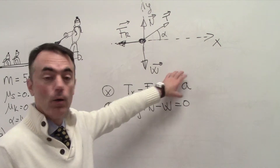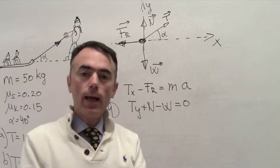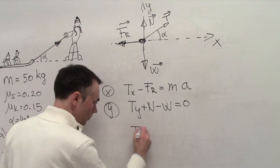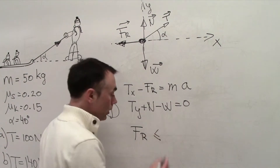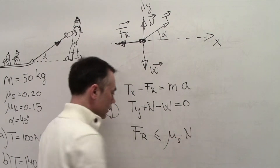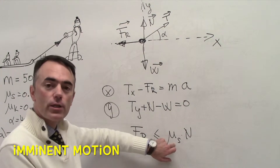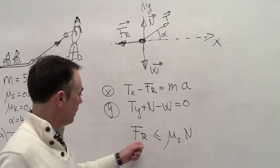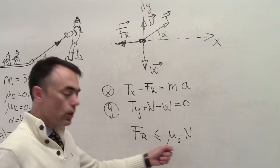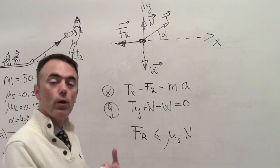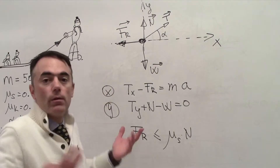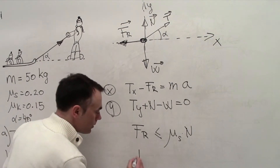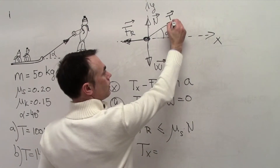We need to find if the x-component of tension is larger than the force of friction. The force of friction is less than or equal to mu-static times N — that's the maximum force of friction when the slide is not moving. If the applied force Tx is smaller than this limit, friction will compensate and there will be no motion. We know that Tx equals T cosine alpha.